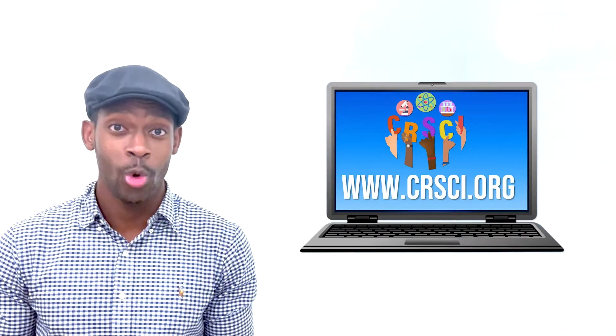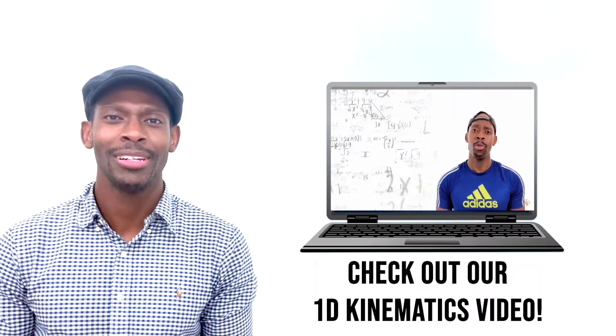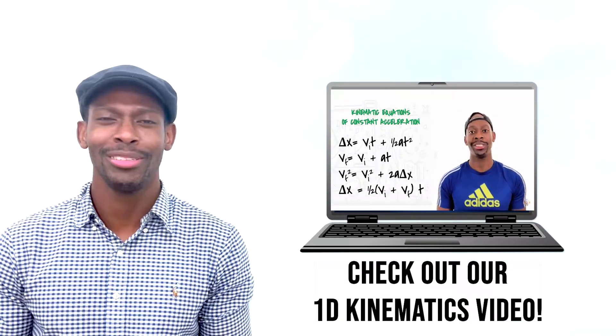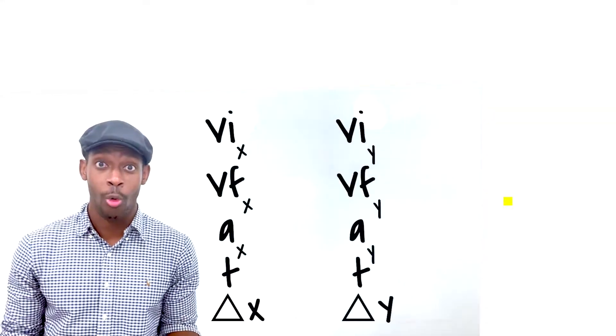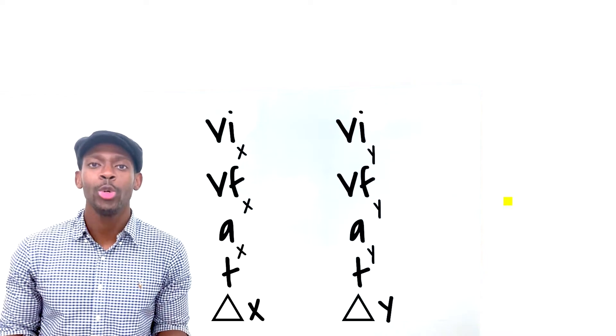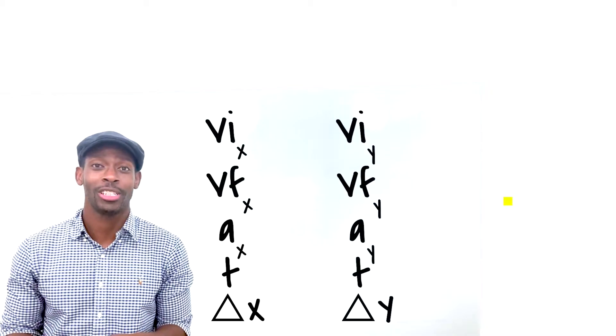Now, if you were with me when we solved one-dimensional kinematic equations, this is going to be very similar, but a little bit more complicated, but also easier, but harder. But since we're in two dimensions, that means we have two sets of symbols for our x-axis and for our y-axis. Now we're going to do what we always do. We're going to pull out our givens and plug them in the correct spot.